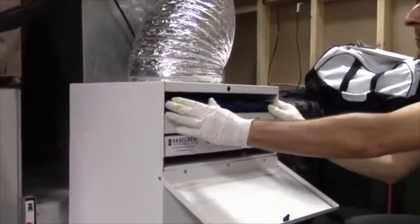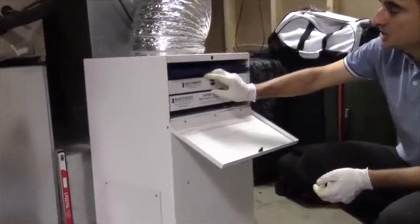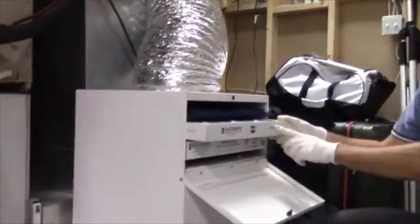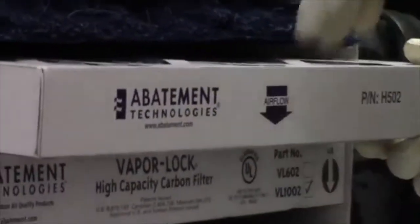Okay, filter one is done. In the case of the CAP 1200, stage two is a particle filter. It's called the H502. You always install it so that you can read the text. Air flow down.